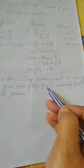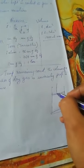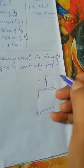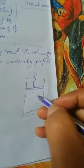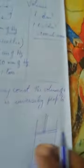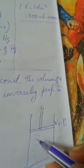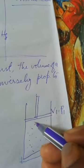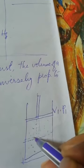Temperature remaining constant, the volume of a given mass of dry gas is inversely proportional to its pressure. Robert Boyle took a container covered with a movable piston and placed a fixed mass of carbon dioxide gas inside. This gas had a volume of V1 initially at a pressure P1. The piston was movable, and he pushed it inwards to bring it to a new position.